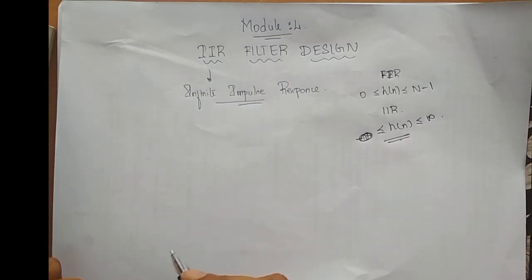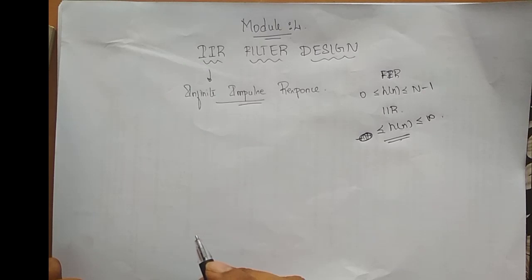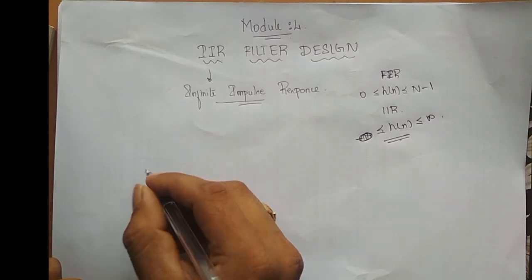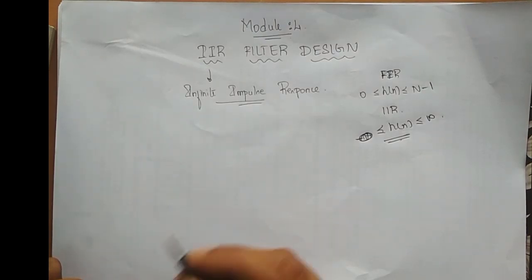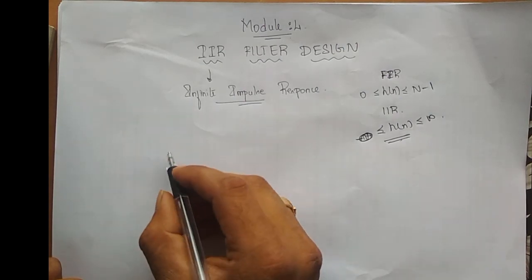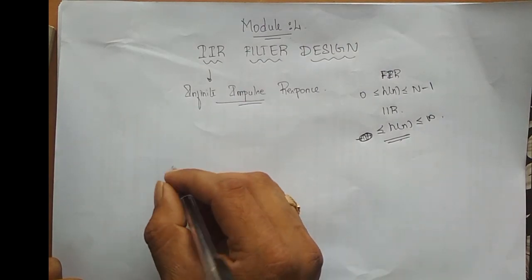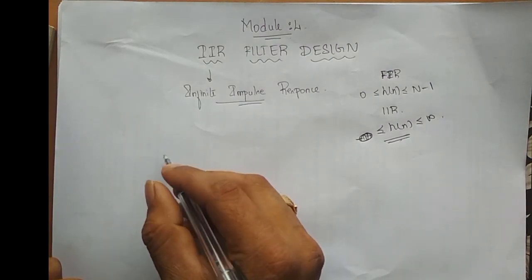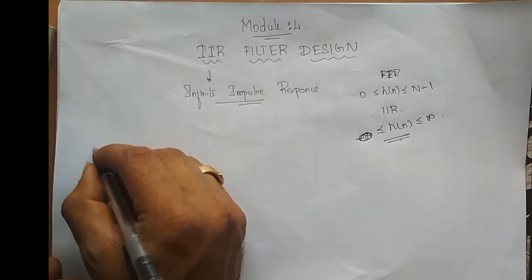Now we shall see how the system function of an IIR filter looks. Before that, we shall see the difference equation, which will then be converted into the system function.